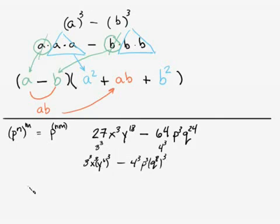Okay, so let's go ahead and we can rewrite this like this with our a and b. So it's basically going to be 3x y to the sixth, the quantity cubed, minus 4p q to the eighth, the quantity cubed, where our a is this and our b is that.